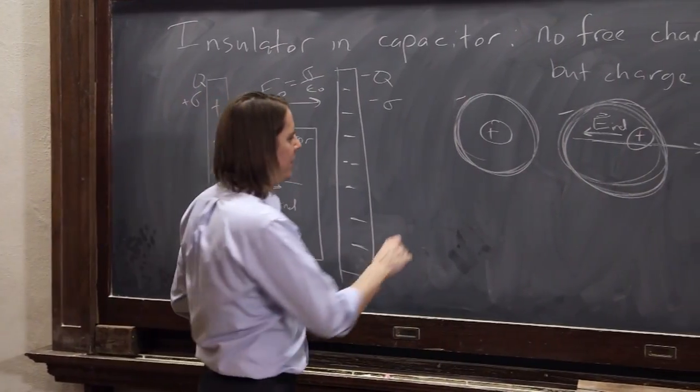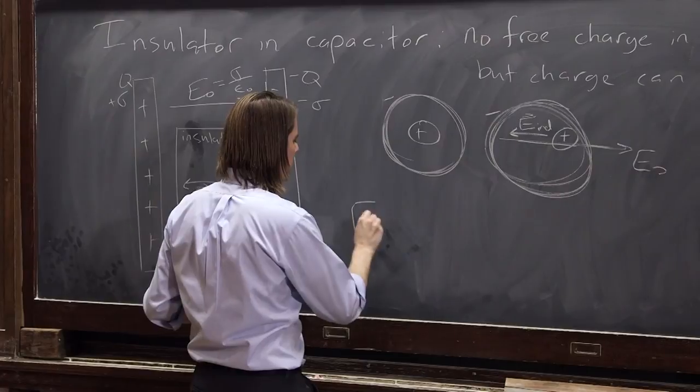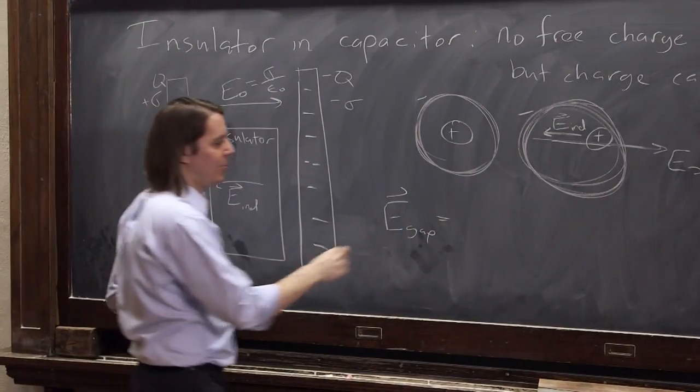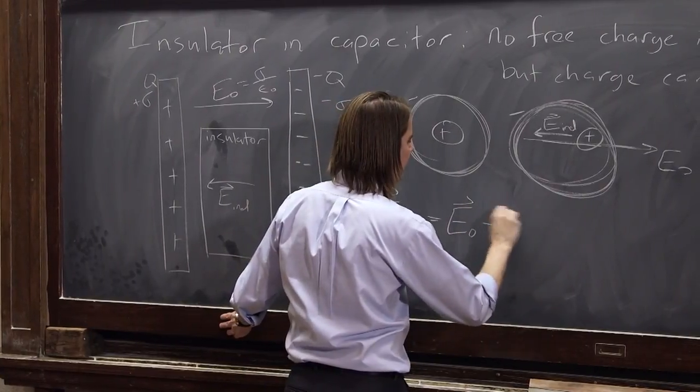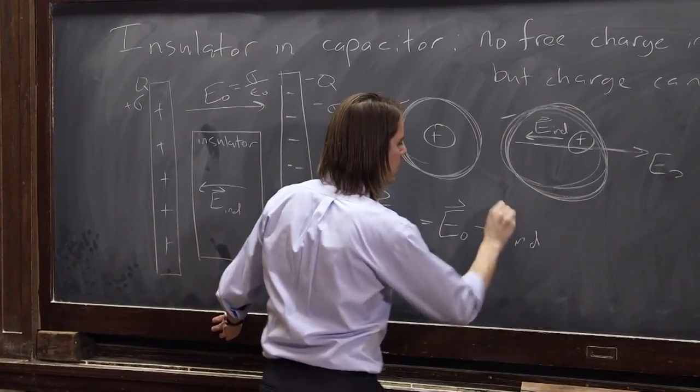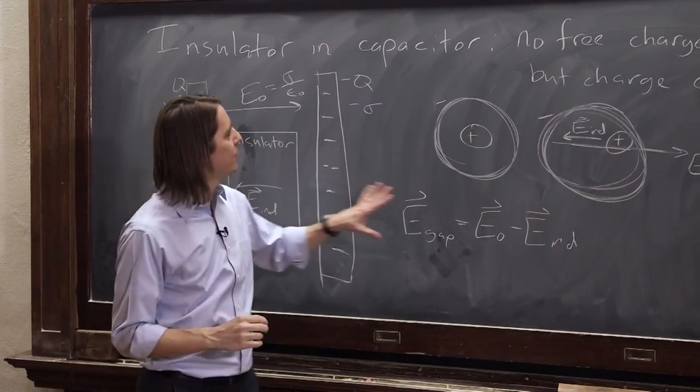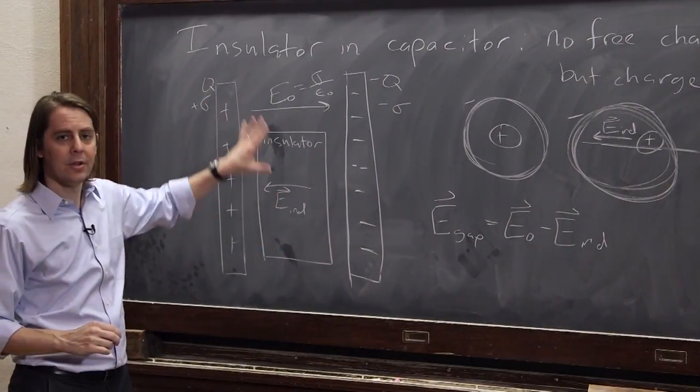So when you put those together, then the field in the gap is just superposition. You just add them up. So it's E naught minus E-induced.